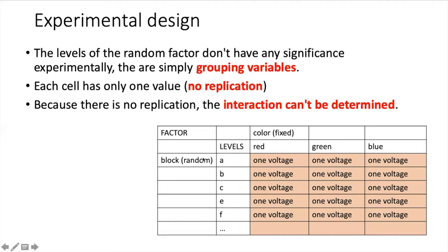The levels of the block don't really have any significance. In this case, they're just named A, B, C. We could name them Fred, Joe, and Charlie if we wanted to.